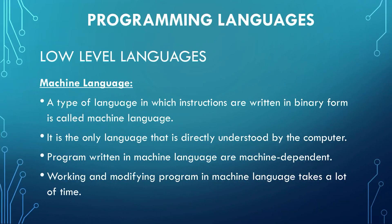Machine language is a type of language in which instructions are written in binary form. It is the most lowest type of language, which is most close to the hardware. The problem is that this language is directly understood by the computer and it is machine dependent. Machine dependent means that as this language has to do something with the hardware and each device can have different hardware, a program might run very efficiently on one hardware but when we try to run it on some other machine with different hardware, this program might not even run. This is known as machine dependence.